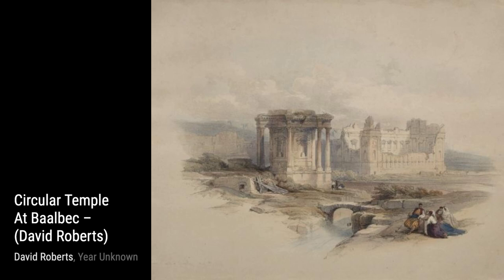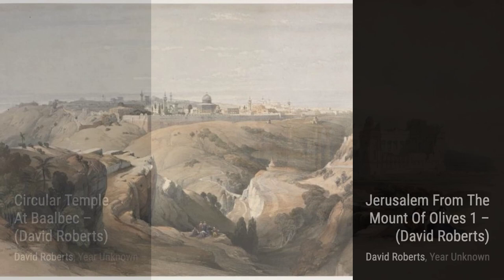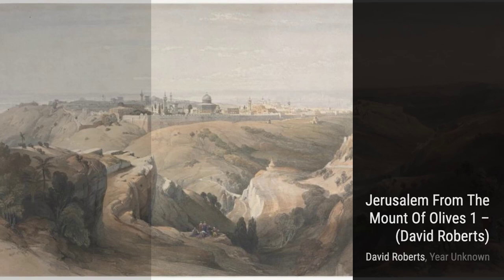Next, we have Interior of a Church. Roberts transports us to a quiet church, where the play of light and shadow creates a serene atmosphere. The attention to detail in the architecture and the use of color make this painting truly remarkable.